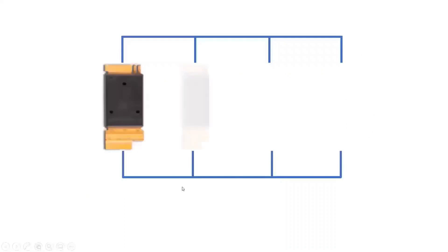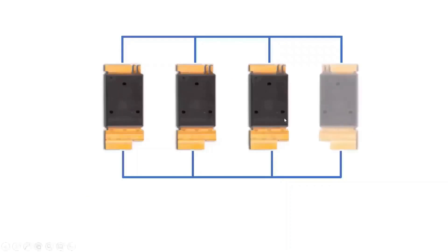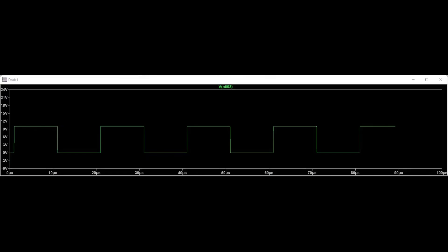The 4 MOSFETs paralleled per switching device in the inverter is switched on and off by the gate source voltage applied to the gate terminal of the device. Based on the information extracted from the datasheet, the device is entirely switched on when the gate source voltage is within 10 volts to 25 volts.